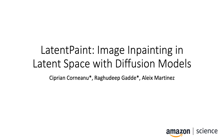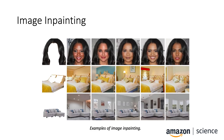Presentation of Latent Paint: image inpainting in latent space with diffusion models. This research has been conducted at Amazon. Image inpainting infers missing parts in an image based on available regions specified by a binary mask. This work focuses on image inpainting with diffusion models.